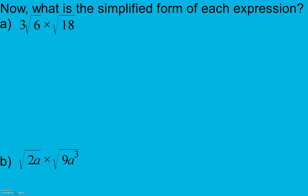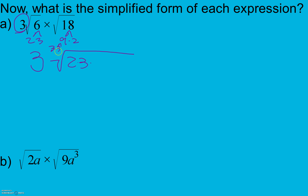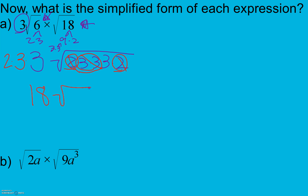In the next practice problem, 3 is outside my square root, so it stays outside. Inside my first square root I have a 6, which is 2 times 3. And inside my second square root I have an 18, which is 3 times 3 times 2. I can combine the radicands into one square root. I find a pair of 3s that comes out as a 3, and a pair of 2s that comes out as a 2. Outside I have 3 times 3 times 2 = 18, and inside I have a 3 left. So the answer is 18 times the square root of 3.